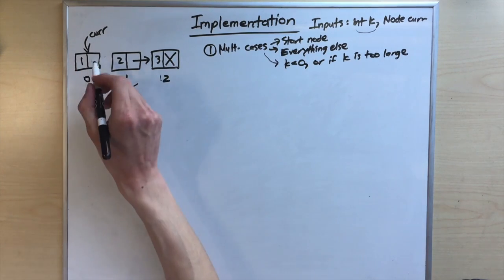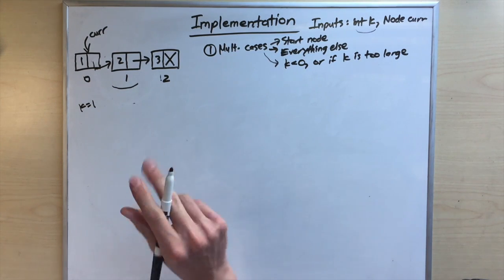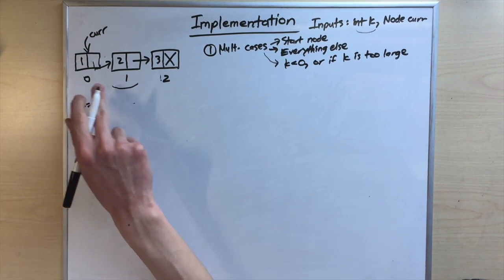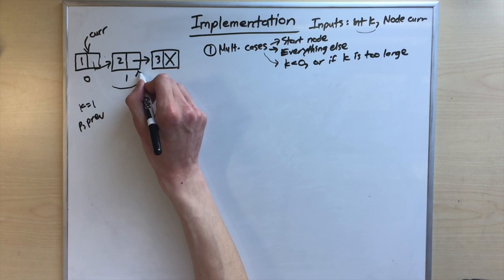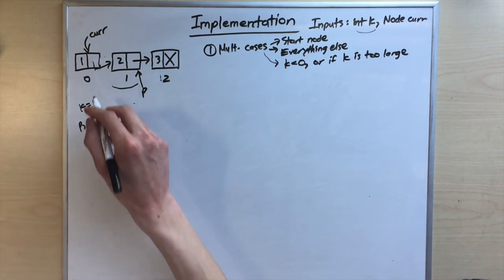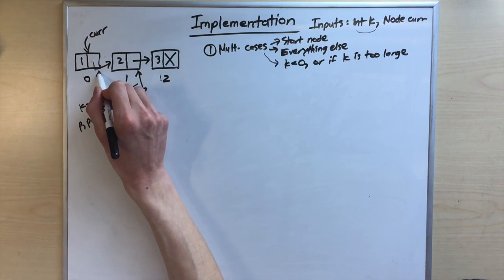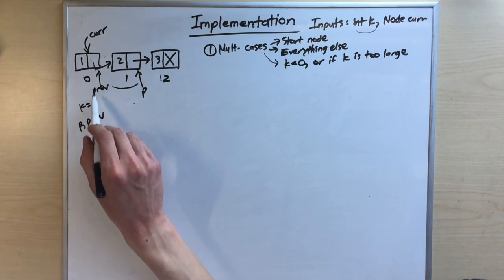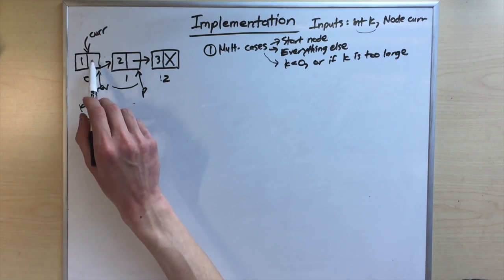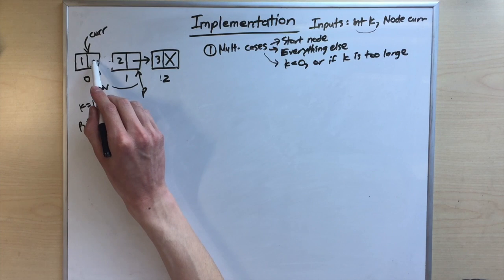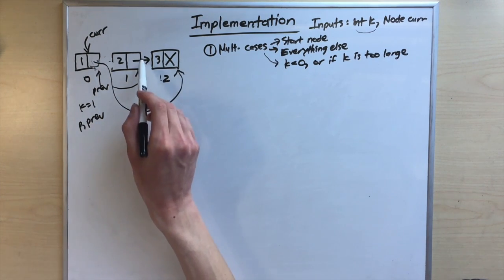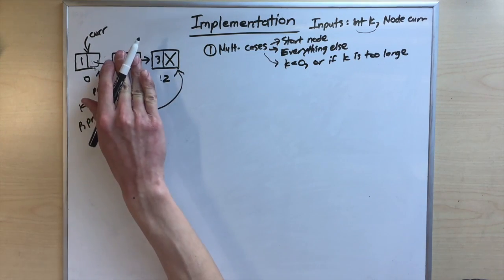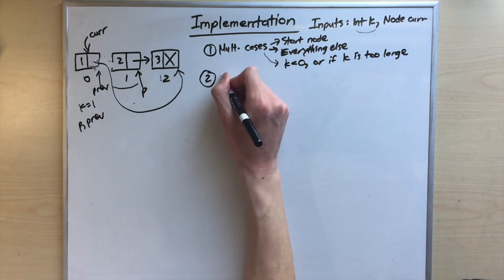We'll use two pointers: p and prev. We move p to the node we want to delete, and prev stays one node behind p. To delete the node, we set prev.next equal to p.next — this skips over the target node, and Java destroys it. That's our main deletion method.